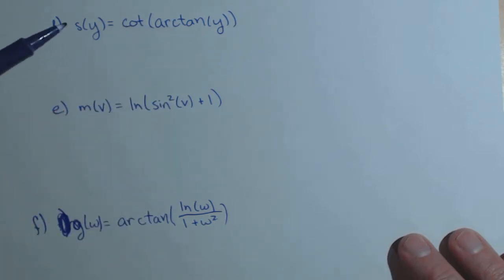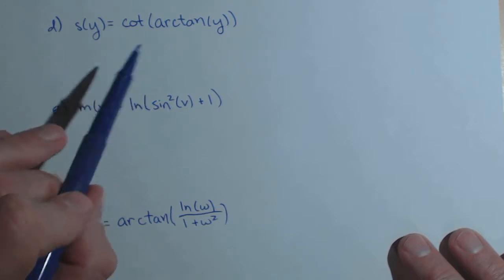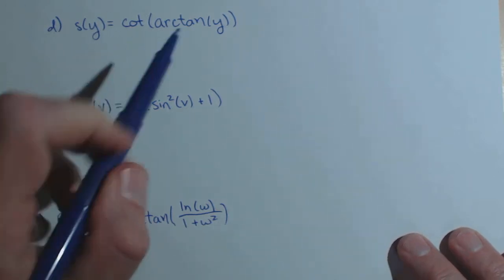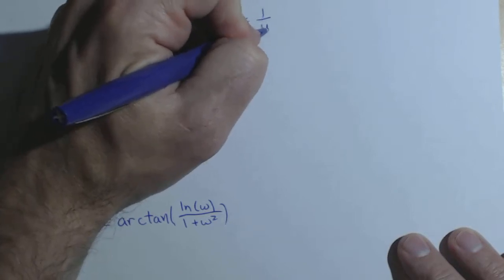Now one thing that we lose track of when we're learning all these derivative rules, if you can simplify early on, then do so before you take the derivative. For instance, with right angle trig, this actually simplifies down to one over y.